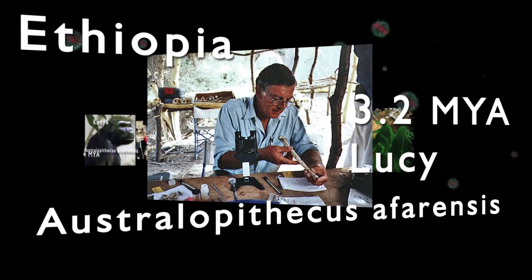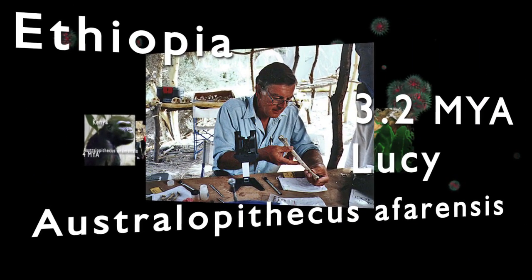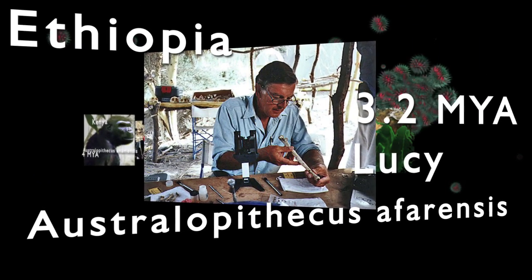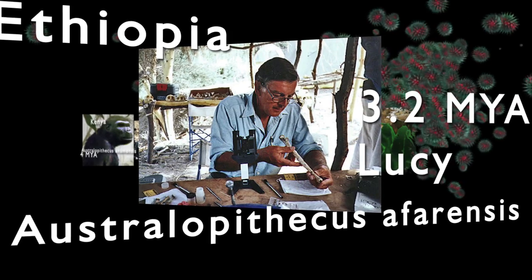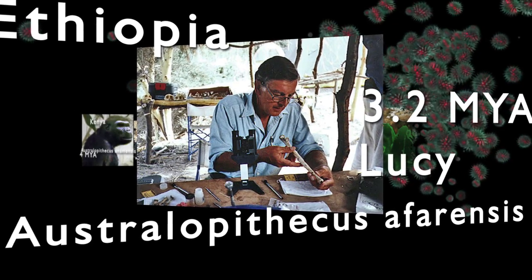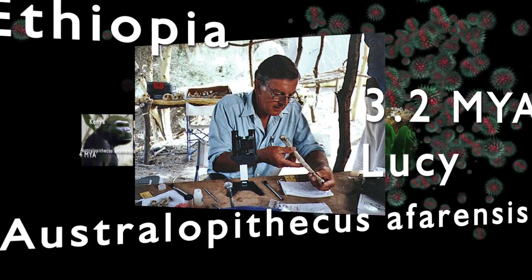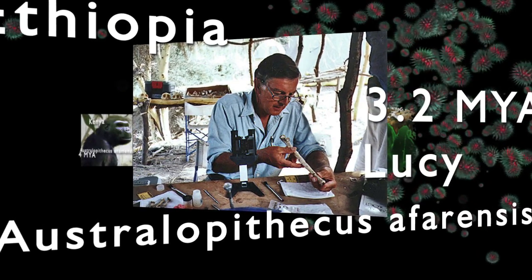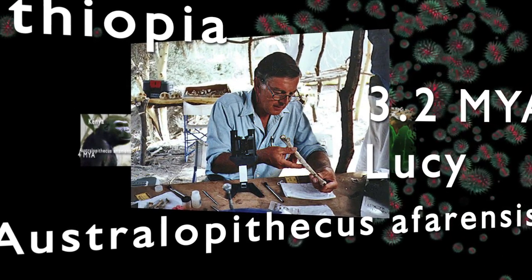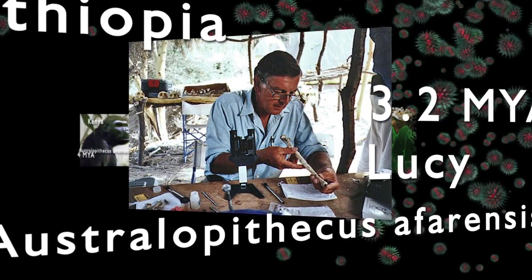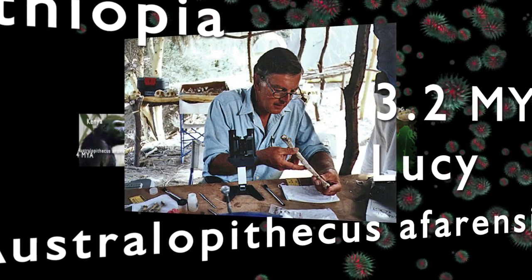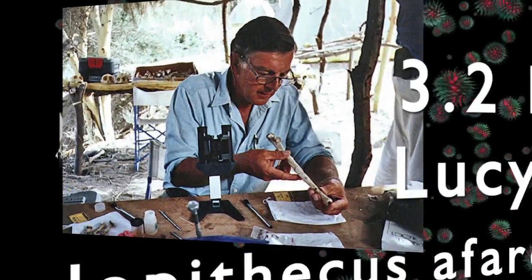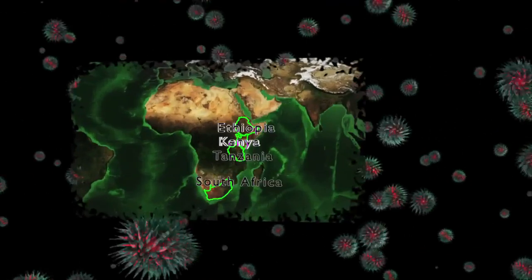In 1974, Donald Johanson discovered fossils of Australopithecus afarensis in Ethiopia dated to around 3.2 million years in the past. Johanson christened his fossil find Lucy, after the Beatles song Lucy in the Sky with Diamonds.